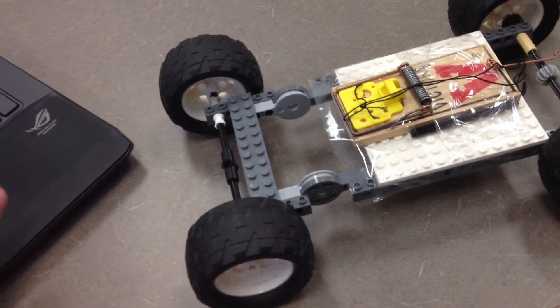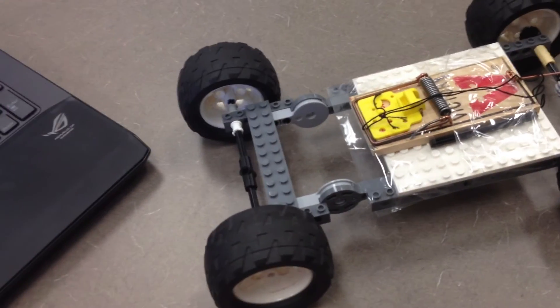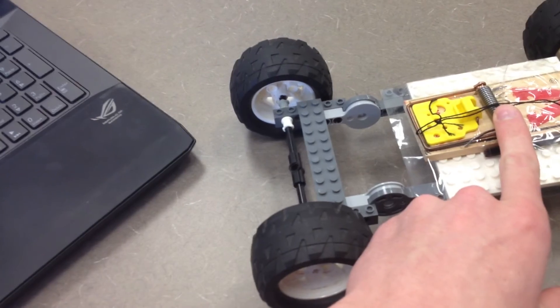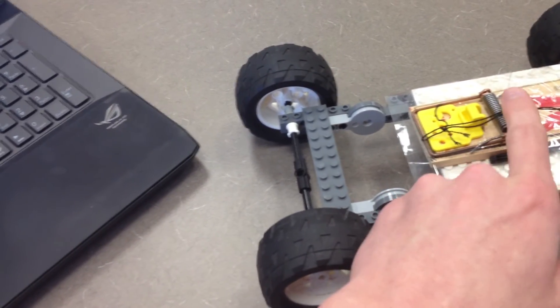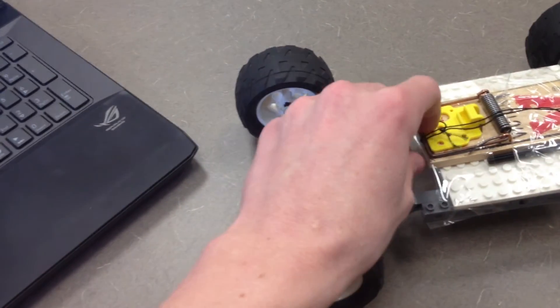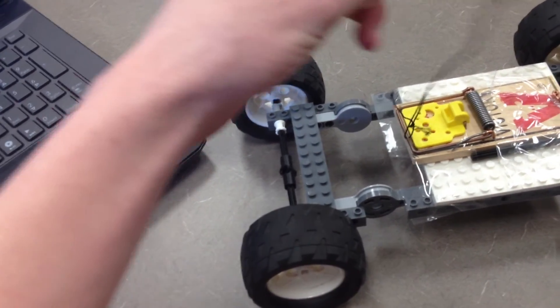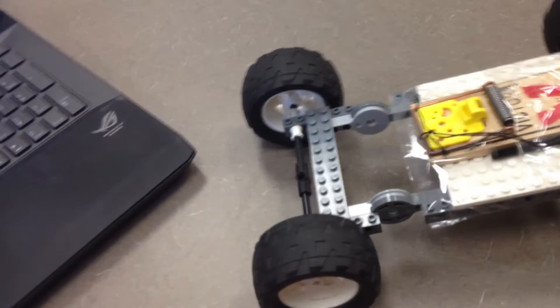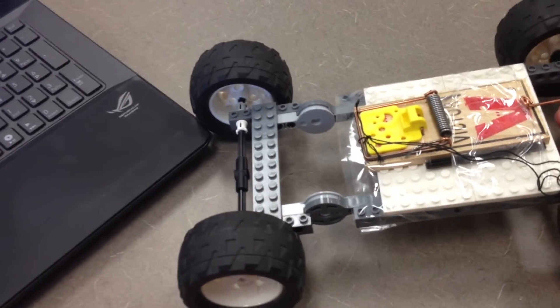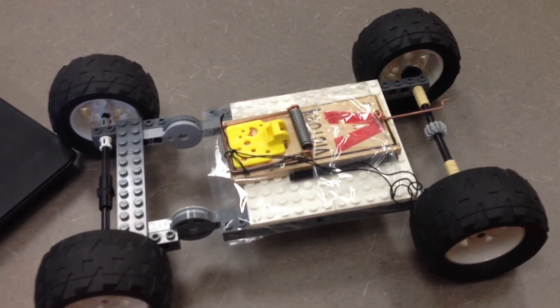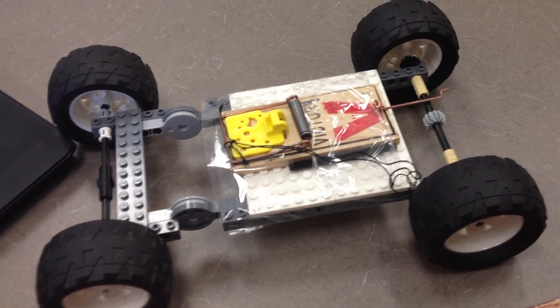The energy transfers in this system start with the potential energy in the mousetrap, which is stored in the spring, causes tension in the string, which then turns into kinetic energy in the gear, which is connected to the axle, which allows the tires to push backwards on the ground using friction. Finally, the ground pushes forward on the tires.